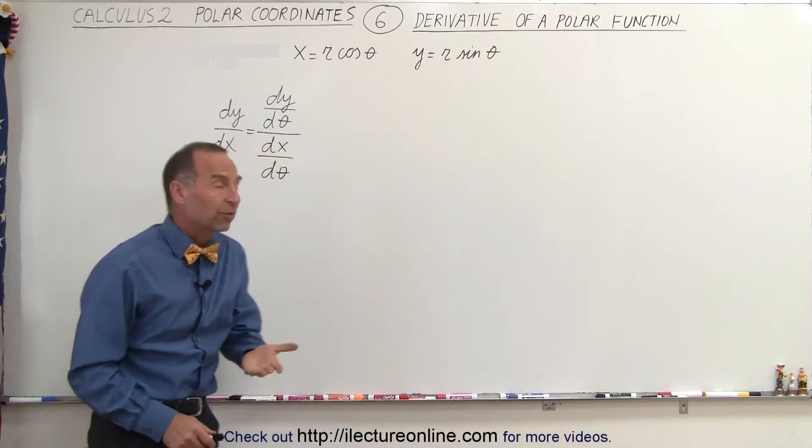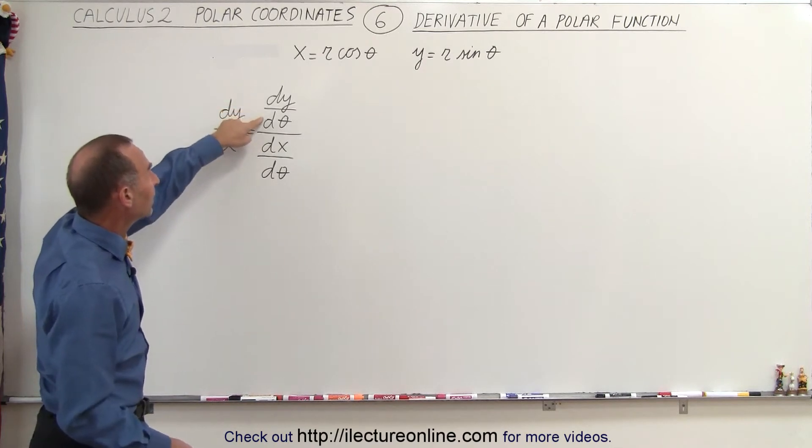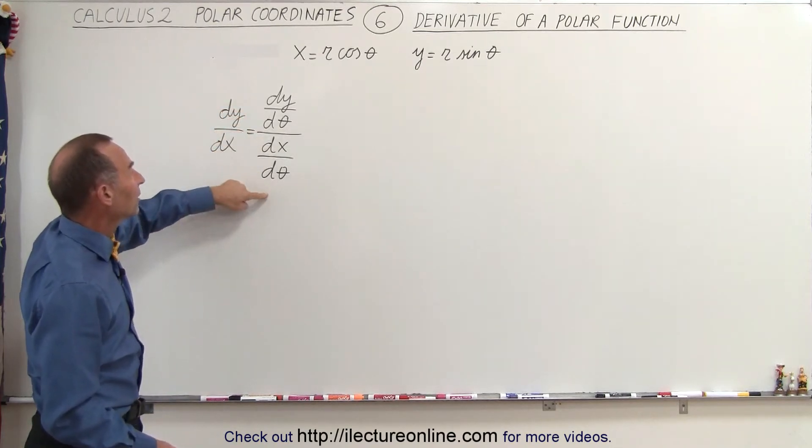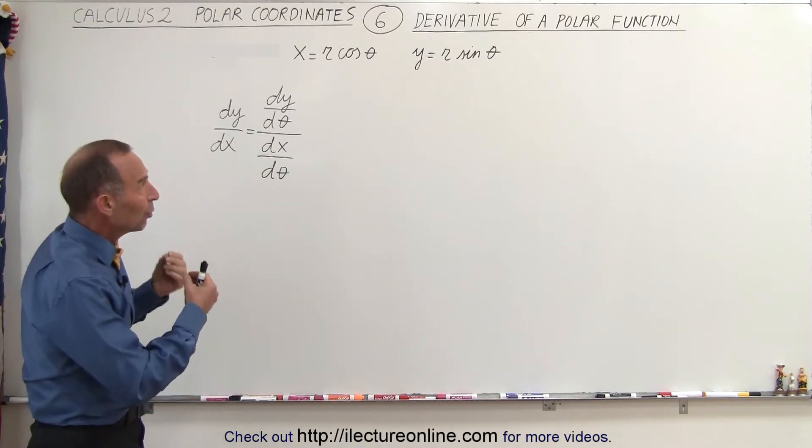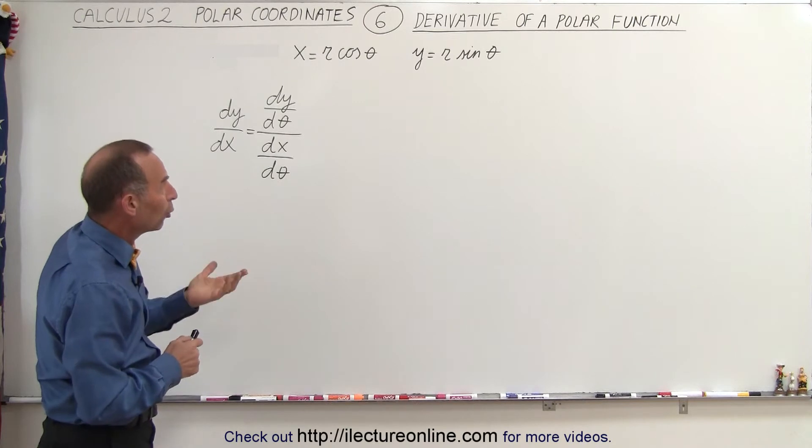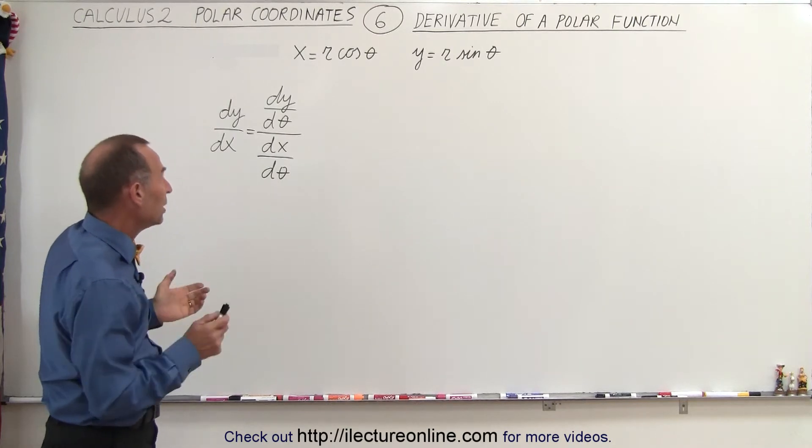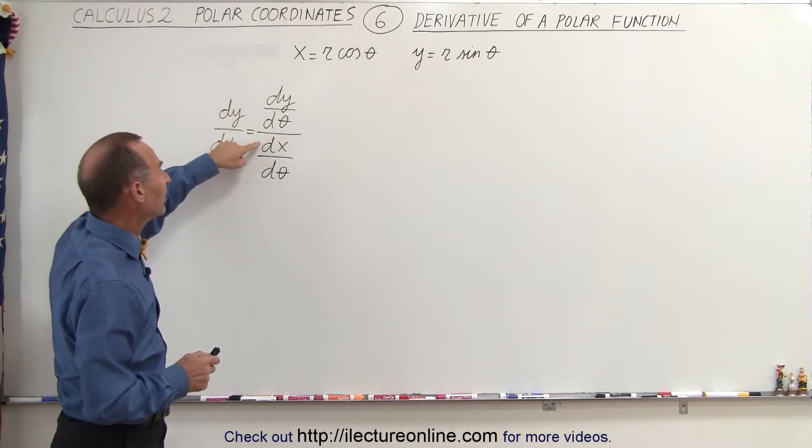just like with typical parametric equations, dy/dx is defined as dy/dθ divided by dx/dθ. Theta then becomes the parametric variable, but in this case we use it in the same sense as we do for polar functions. What we need to do now is find dy/dθ and find dx/dθ.